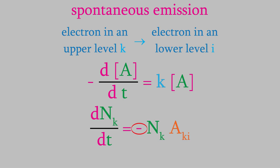The negative sign is there because the population of the upper state is decreasing when the spontaneous emission happens. The constant AKI is called the Einstein constant of spontaneous emission. And its value is different depending on the system. We'll talk about how to determine it a little later in this video.